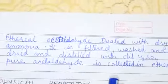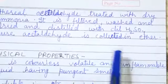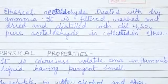Ethereal acetaldehyde is treated with dry ammonia, filtered, washed and dried, and distilled with H2SO4. Pure acetaldehyde is collected in ether.